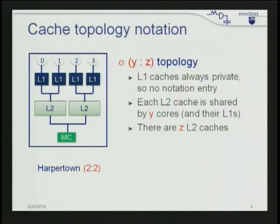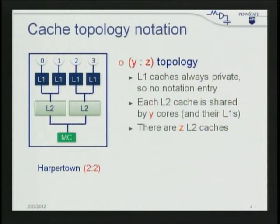We've been working for a number of years looking at the design of on-chip caches, which are the last line of defense before hitting the memory wall, in the context of multi-cores. Here's a HarperTown chip — it's got four cores, each with a private level one cache (actually two level-one caches: split instruction and data). Two cores share an L2 cache, giving two L2 caches on the chip.